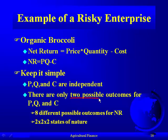We're also going to keep it simple and say there are only two states of nature. Obviously there are an infinite number of possibilities in price, quantity, and cost, but to make it manageable we'll say there are only two possible outcomes each. Two states of nature for price, two for quantity, and two for cost. That means there are eight different possible outcomes for net returns, because two times two times two gives us eight different states of nature.